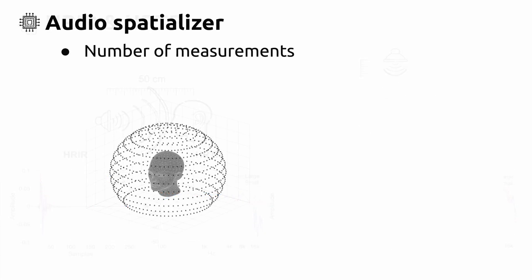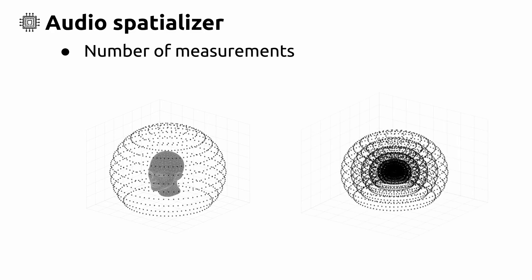To generalize the spatialization, a mesh of HRTF measurements on the surface of a sphere around the listener is commonly used. These recordings are difficult to perform and traditionally they are limited to a single radius. The more HRTFs available in a sound field, the more accurate the spatialization can be achieved.